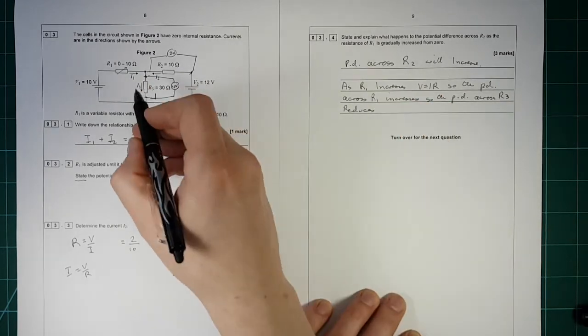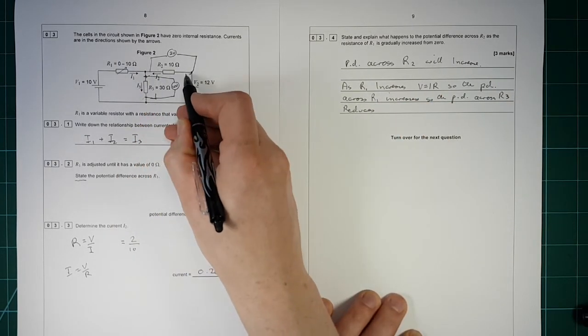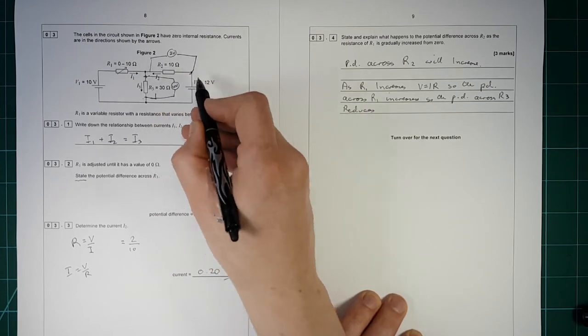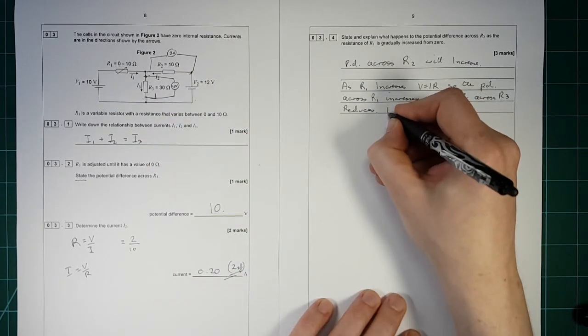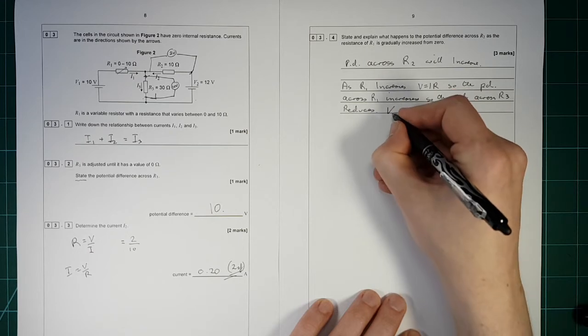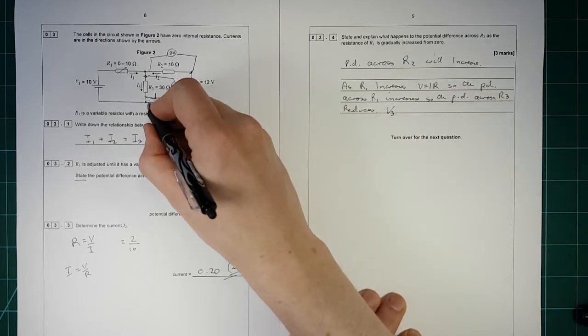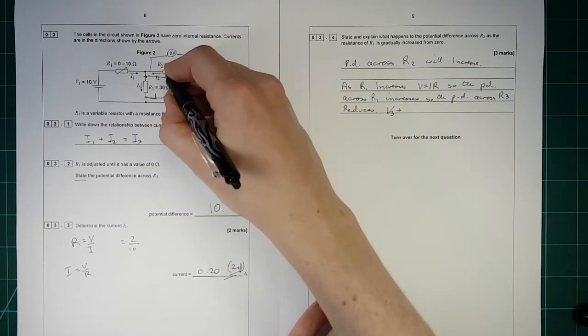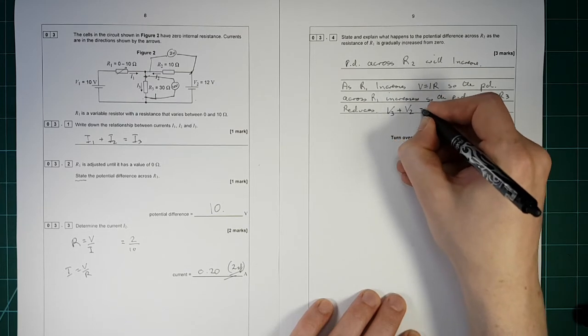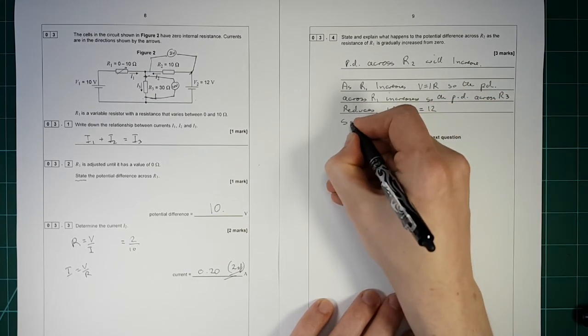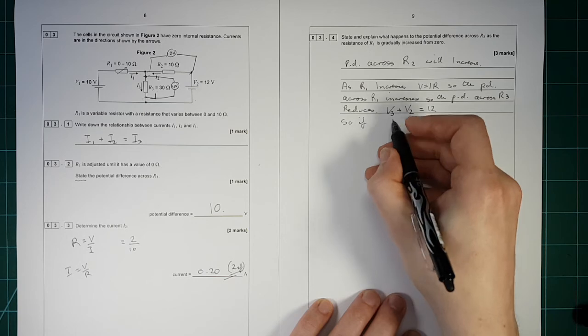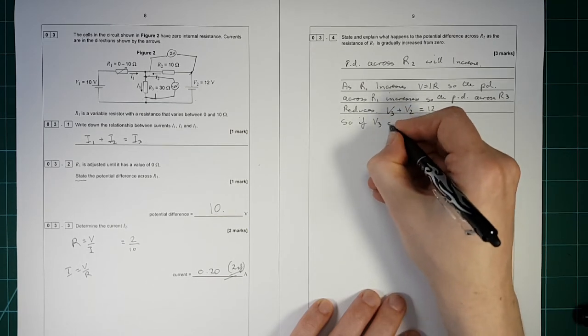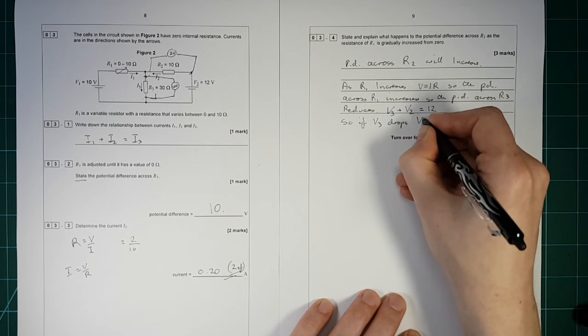Now the PD across R3 plus the PD across R2, this resistor here, has to equal 12. So the PD across R3, I'm going to just call that V3, plus the PD across R2 must equal 12. So if V3 drops, V2 rises. Okay.